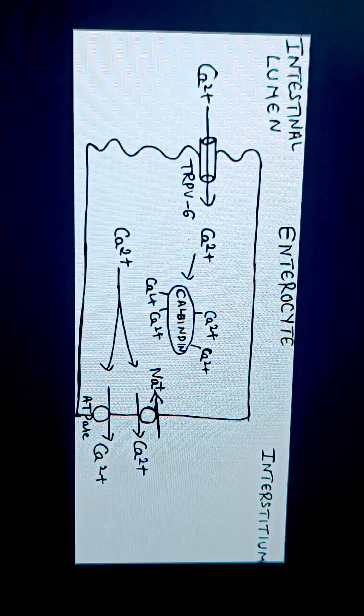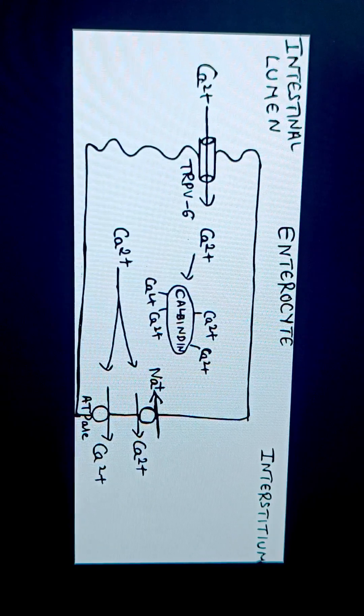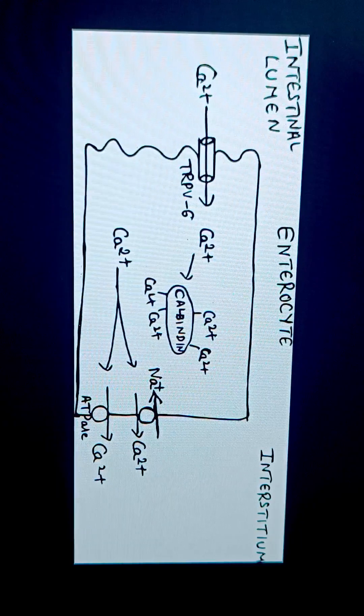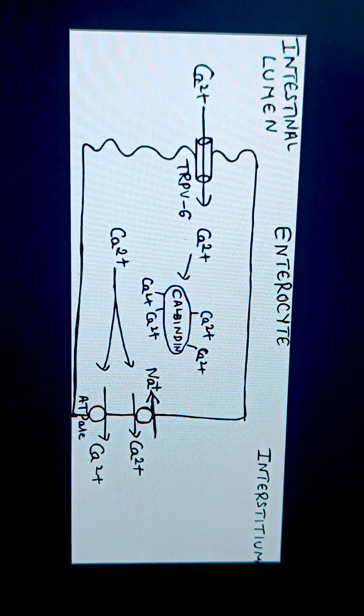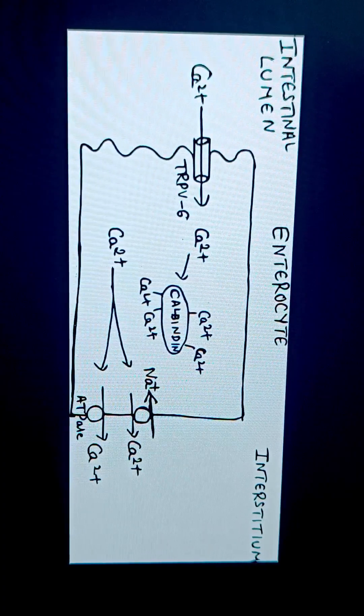They convert into ionized form, Ca2+. These ionized calcium ions then pass through the TRPV6 channel, which is the transient receptor potential vanilloid 6 type of channel, and they allow the calcium to move against the concentration gradient into the cytoplasm.